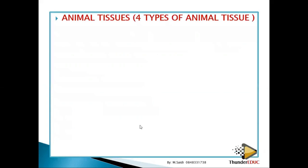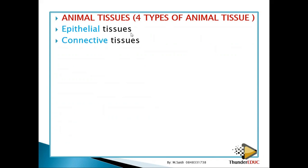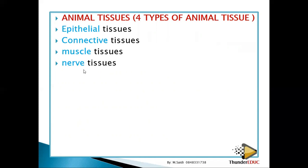What are the different types of animal tissues? We have epithelial tissues, which are found on the outside of organs in most cases. Then you have connective tissues, which connect one organ or one part of the body with another. Then we have muscle tissues, which are very important for locomotion and movement.